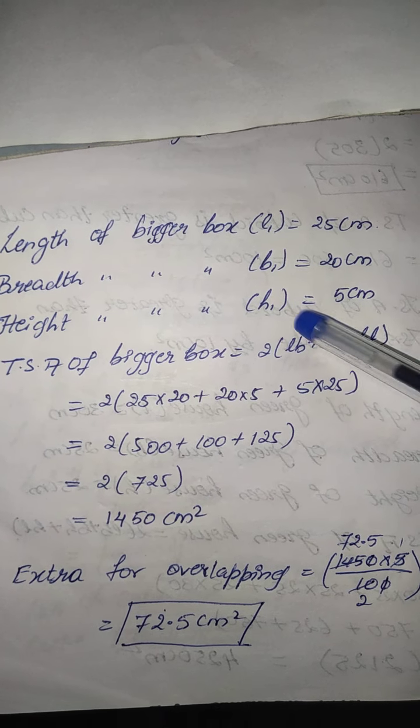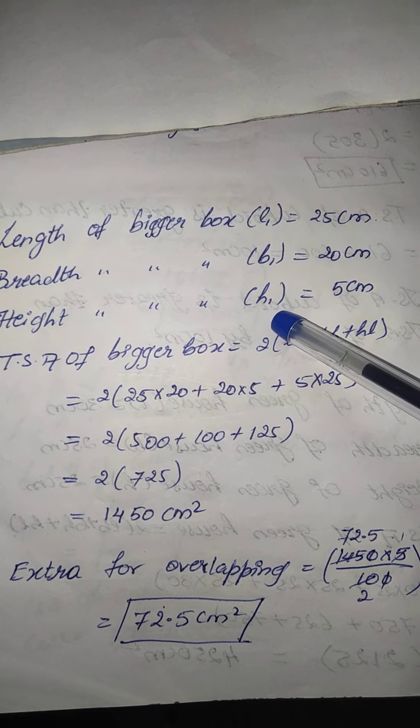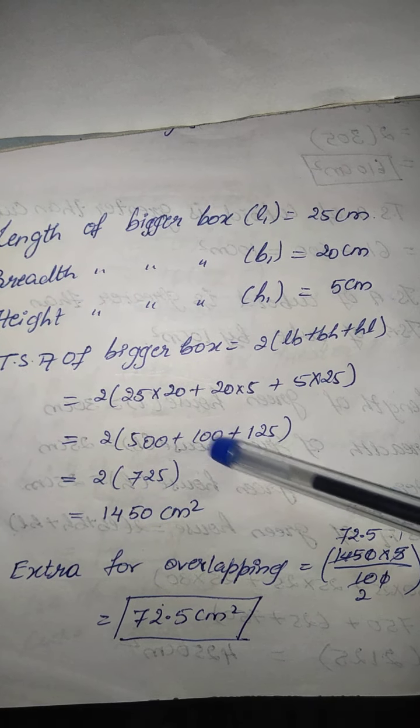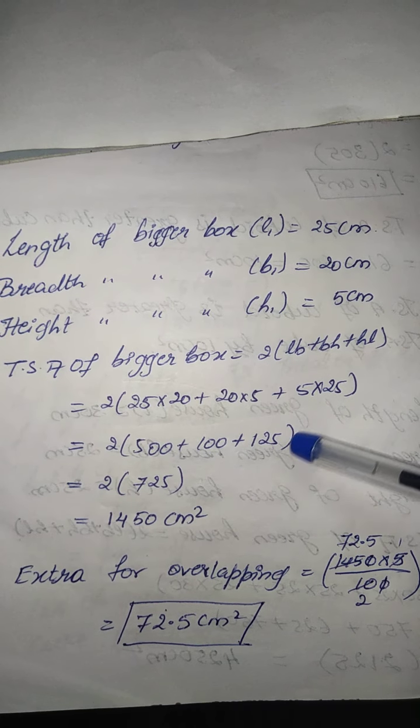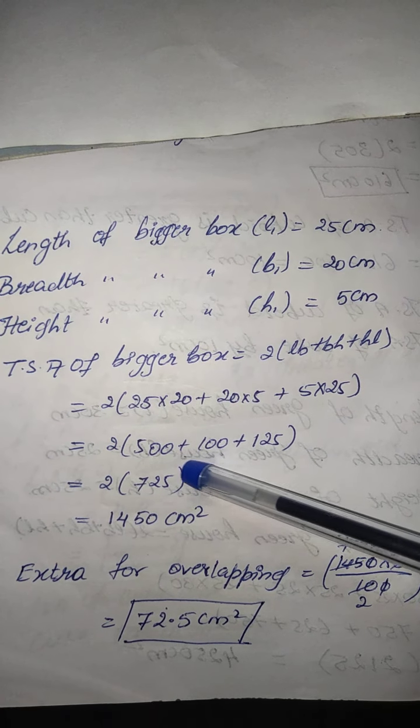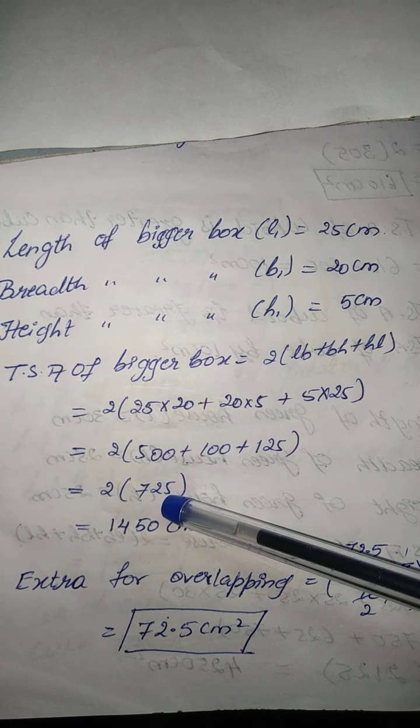I will substitute the values. I have taken it as l1, b1, and h1. And on substituting, 25 into 10 becomes 500, 20 into 5 becomes 100, 5 into 25 becomes 125, and adding all the 3, I will get 725.